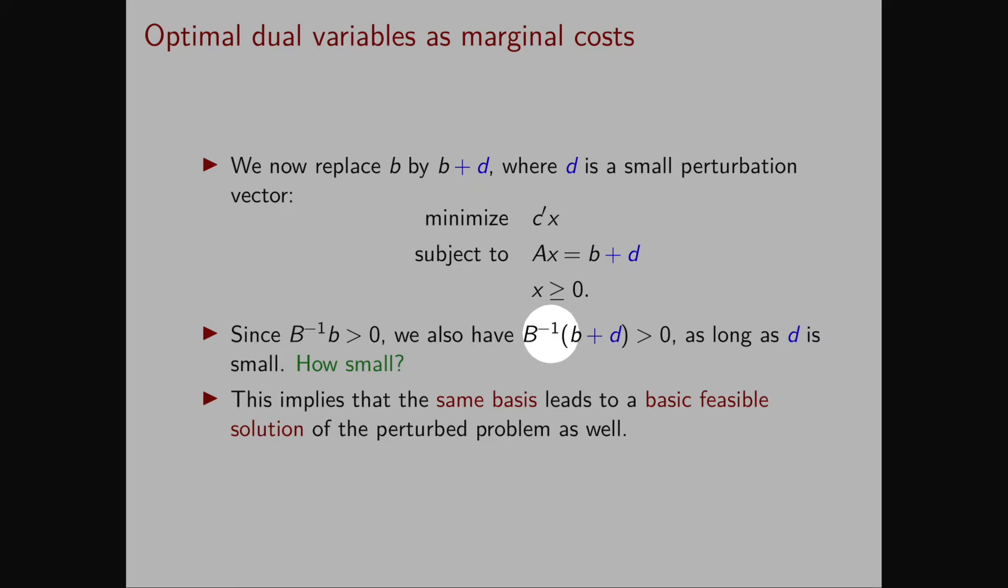Since B inverse B is strictly positive, if the vector D is sufficiently small, we have that also B inverse times B plus D is strictly positive.